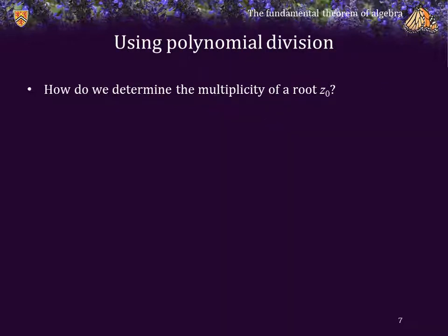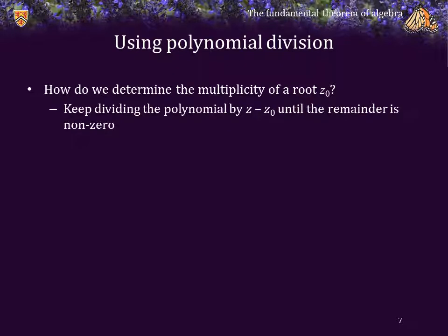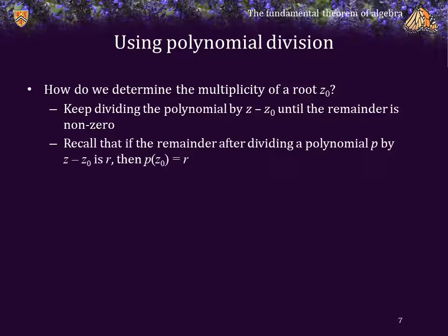How do we determine the multiplicity of a root z0? We will keep dividing the polynomial by z minus z0 until the remainder is non-zero. Recall that if the remainder after dividing a polynomial P by z minus z0 is r, then P at z0 is equal to r. Thus, if the remainder is 0, P at z0 is equal to 0, and therefore z0 is a root of P.